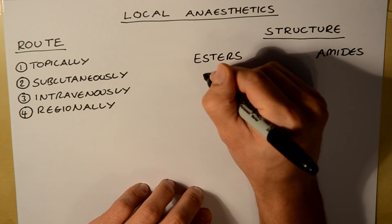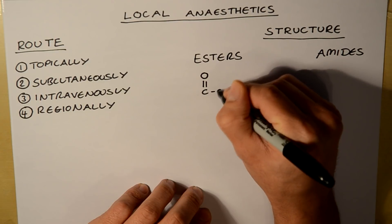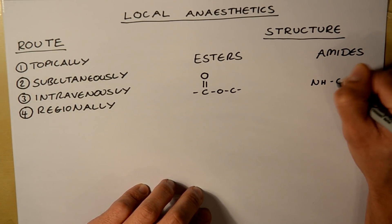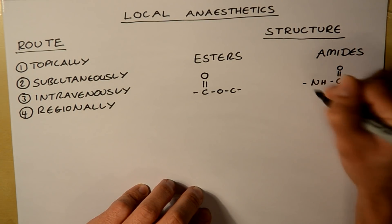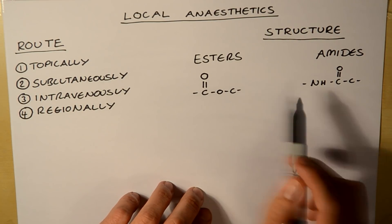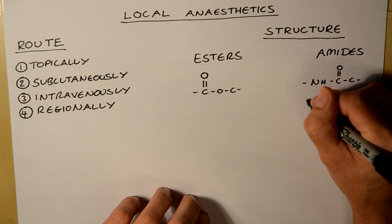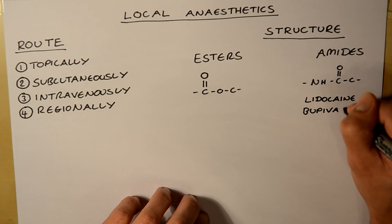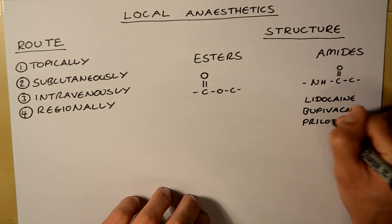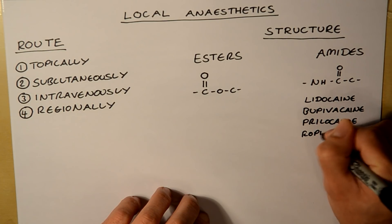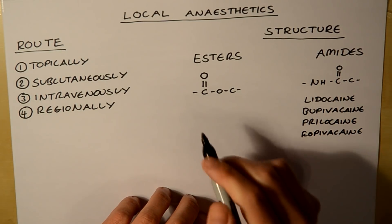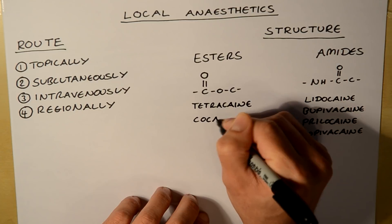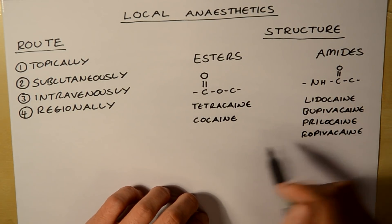An ester has the linkage O–C(=O)–O–C, and an amide would be N–H–C–C(=O). The amides include lidocaine, bupivacaine, prilocaine, and ropivacaine. The esters include tetracaine and cocaine. These are some of the more common ones you'll come across.